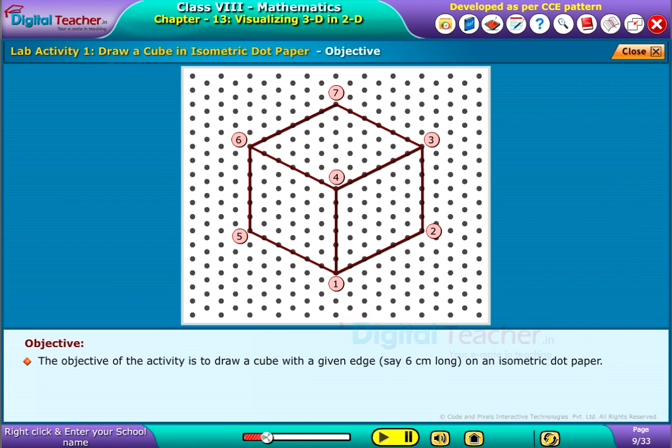The objective of the activity is to draw a cube with a given edge, say 6 cm long, on an isometric dot paper.